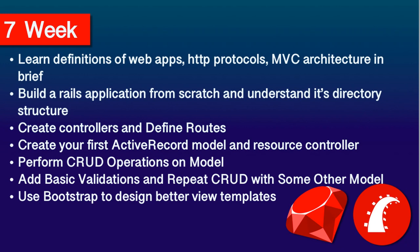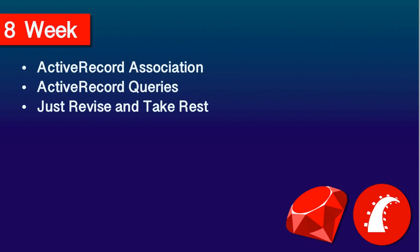Now let's move to the eighth week to learn more deep concepts of Rails. In the eighth week you have to cover Active Record associations and Active Record queries. Active Record associations are the most important part — in any real-world application there exist relationships between two entities, like one-to-many, many-to-many, or one-to-one. In Rails, you use associations to define such relationships. Dedicate at least three days for this. Your learning from the fourth week where you covered relationships in RDBMS will be very helpful here.